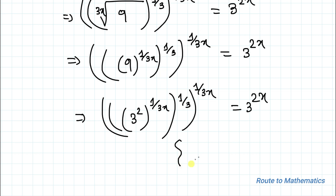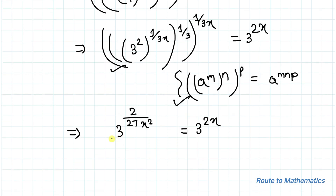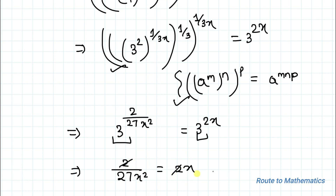Now we know the exponential rule that a to the power m, whole to the power n, whole to the power p can be written as a to the power m×n×p. Applying this rule and simplifying, x squared equals 2x, so the 2's cancel out.